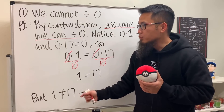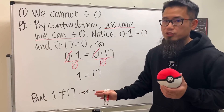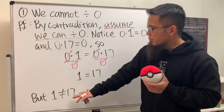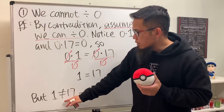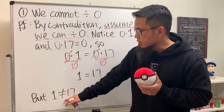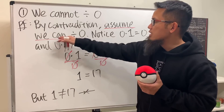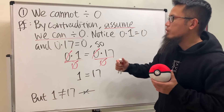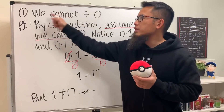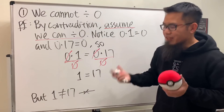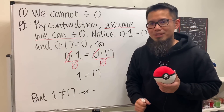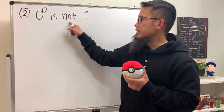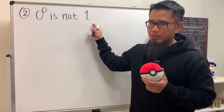We ended up with a crazy result, which means our assumption is false. We conclude that we cannot divide by zero. That's the end of proof one.